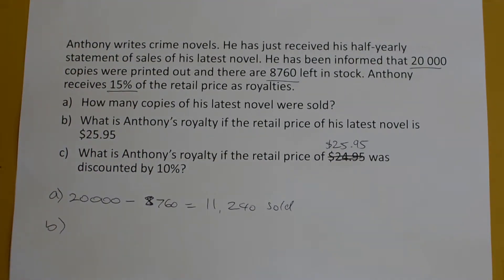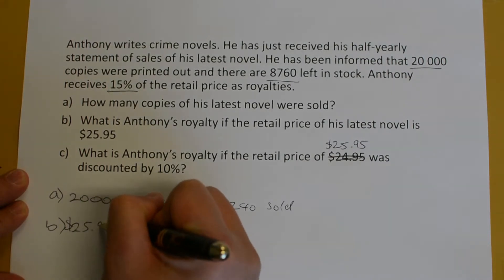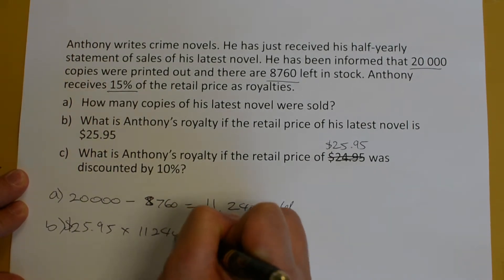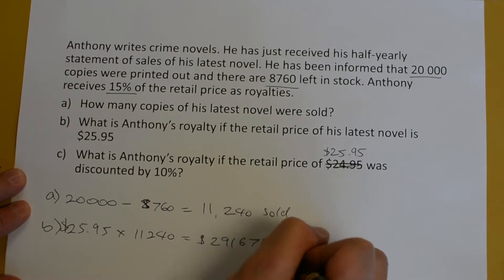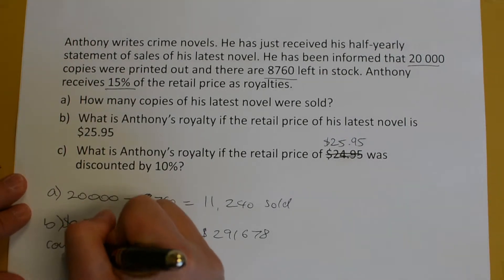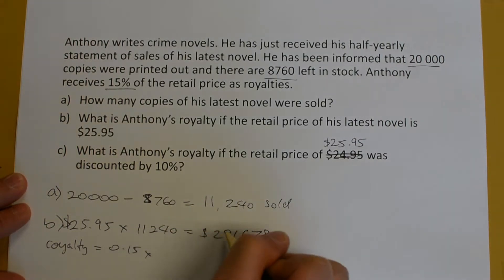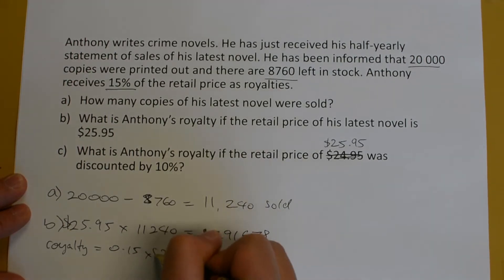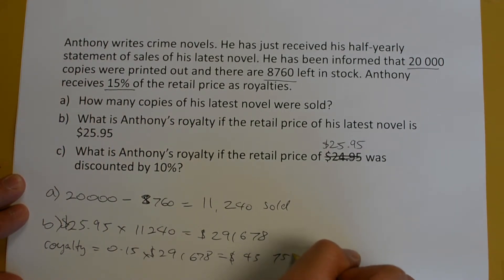Part B: What is Anthony's royalty if the retail price of his latest novel is $25.95? Each book earns $25.95 and 11,240 were sold, which comes to a total of $291,678. Now his royalty is only a percentage of this — 15%, so 0.15 multiplied by $291,678 gives you $43,751.70.